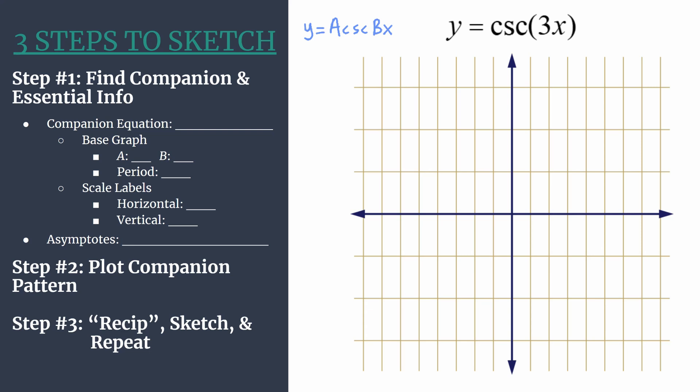Let's dive into Step 1. We're going to find the companion equation and all of its essential information. Our companion equation is the reciprocal equation. We'll graph it so that we can then graph the cosecant equation. To find the companion equation, replace cosecant with its reciprocal sine. So our companion equation here is y equals sine of 3x.